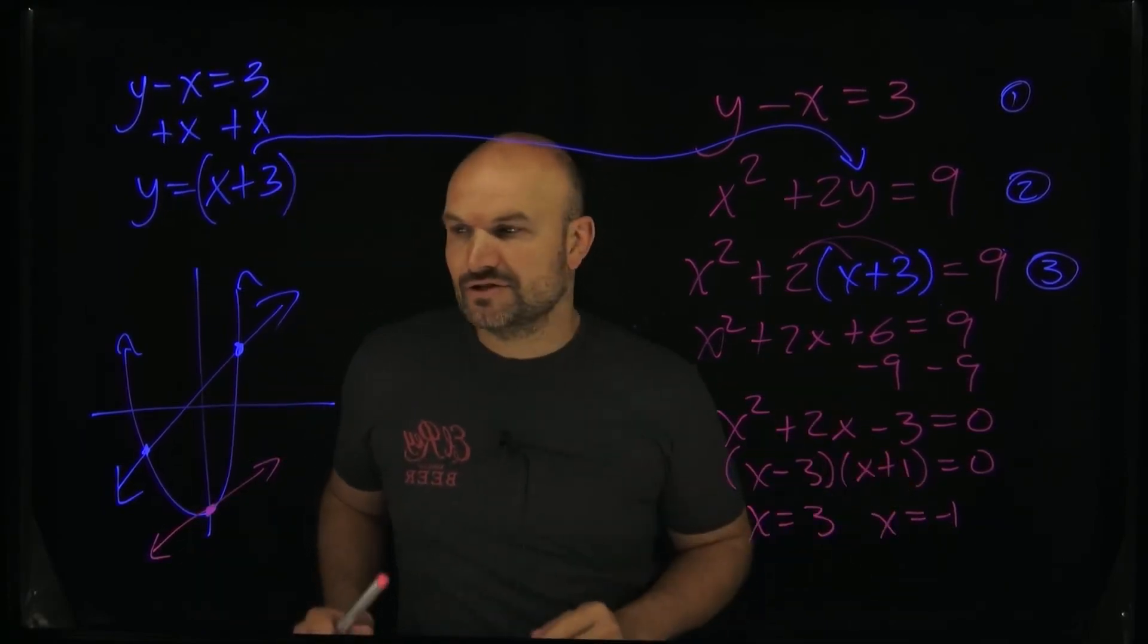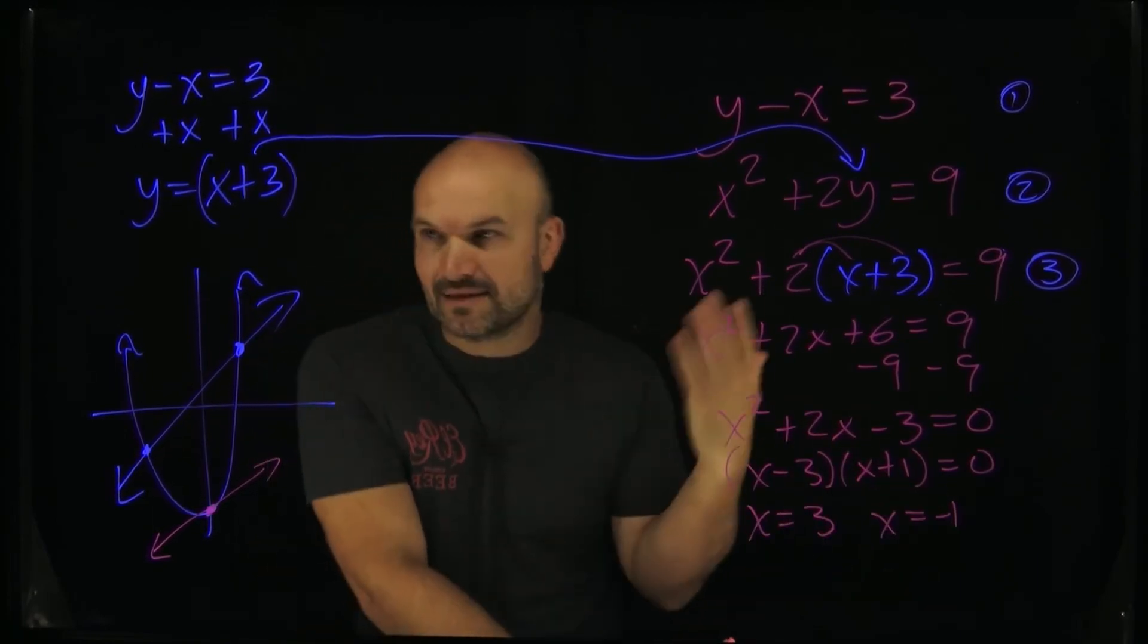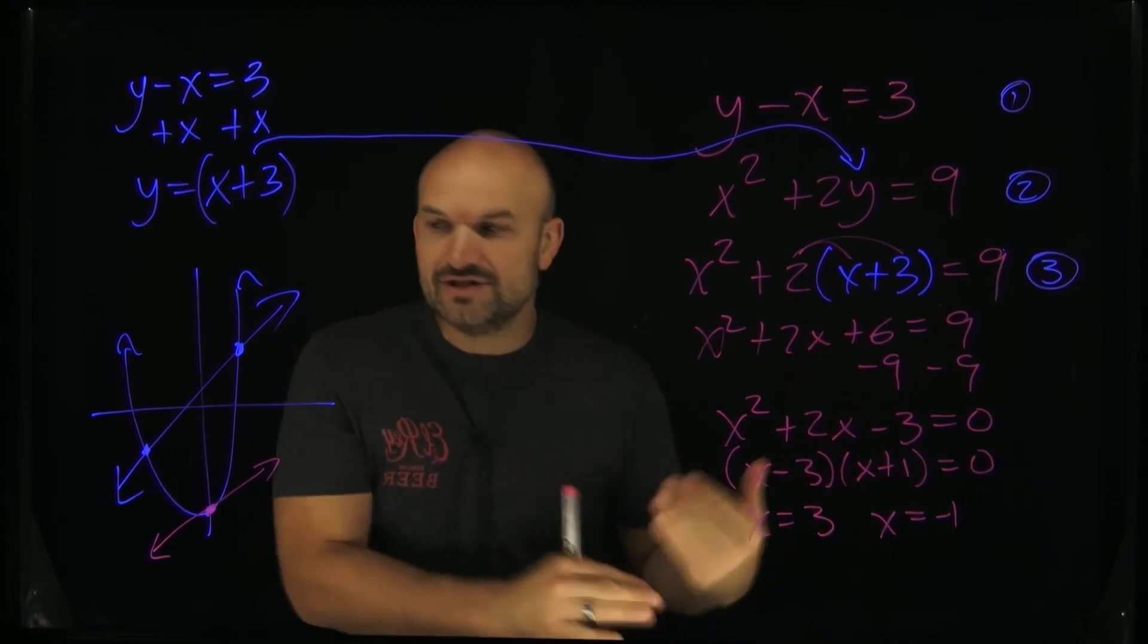But in this case, we know there's not two solutions, right? We know there's two points of intersection. But please do not just rely on like, oh, I found the x and I feel like I'm done. Remember once you solve the x, you got to go and solve for y.